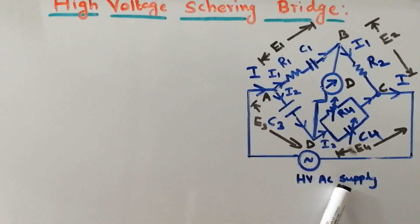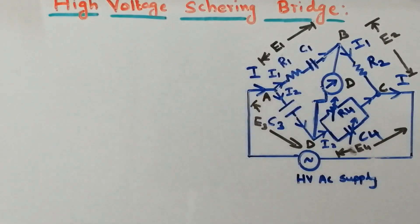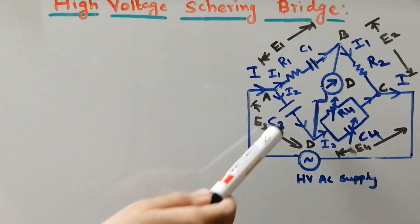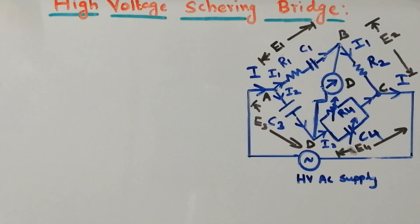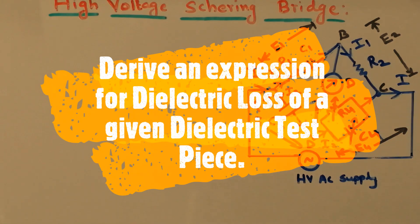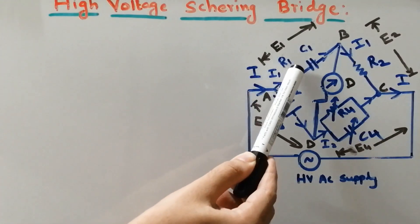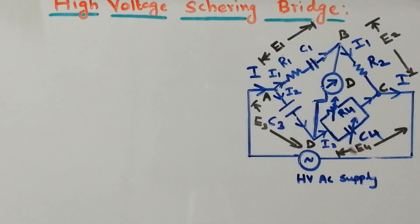We have high voltage AC supply over here. Let us familiarize the different components of respective arms. R1 and C1 represent the equivalent circuit of insulation material. R2 represents a non-inductive resistor. C3 represents the standard value of capacitor, or you can call it a condenser. R4 and C4 are the variable resistor and capacitor respectively. Now, let us consider a cable and its insulator, which are represented by arm R1 and C1.